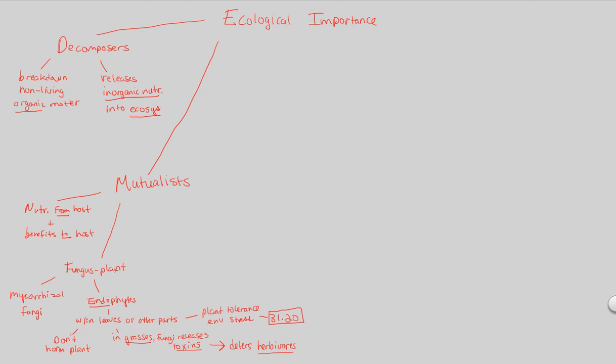Another type of mutualistic relationship is not just fungus-plant, but also fungus to animal. Fungus with animal. That's another mutualistic relationship that these guys have in the entire ecology of the world. What's a good example of this? A classic example is the gut of cattle.